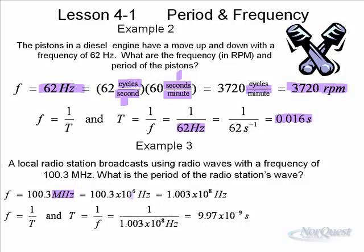So this is 100.3 mega-means times 10 to the 6th. And so really, it's 1.003 times 10 to the 8 Hertz. That's the frequency of the radio wave. It's an electromagnetic wave that leaves the station.